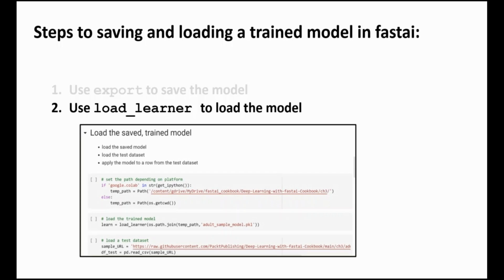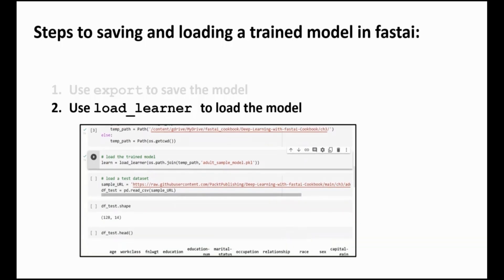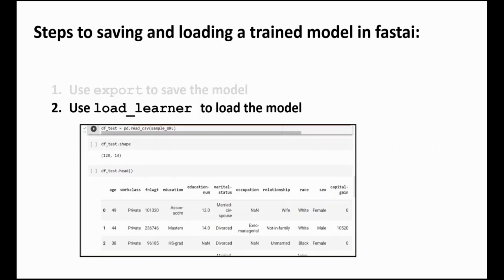For the one-off exercise we set the path for the model the same way we did when we saved the model. Then we use the load learner function with the name of the pickle file where we saved the model with the export function as an argument. Once we've done this we can try the loaded model out on some test data to confirm we get the expected results.